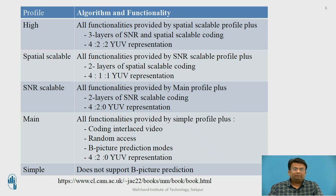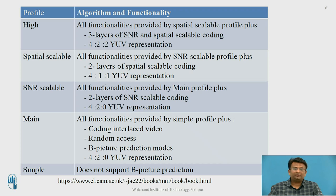In the case of the main profile, all functionalities are provided by the simple profile, plus it includes interlaced coding in the video, random access, bipolar picture prediction modes, and supports 4:2:0 YUV representation. The simple profile does not support bipolar picture prediction.